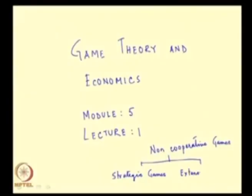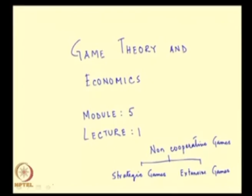There is another category within non-cooperative games which is known as extensive games. This is the second category and the group of games we shall start discussing today. Extensive games are also called sequential games. The difference between strategic games and extensive games is very simple: in strategic games, we assume that players do not take into account the decisions made by other players.